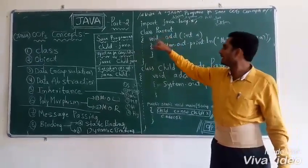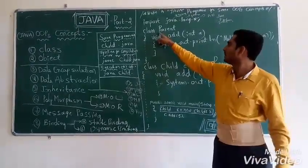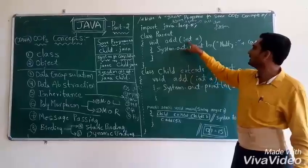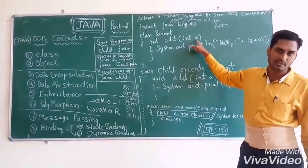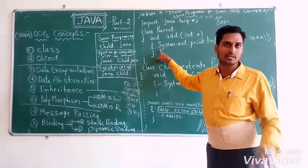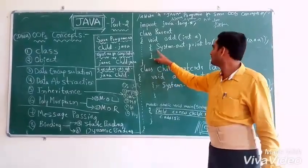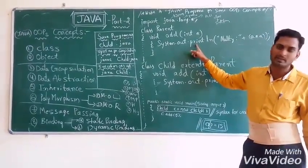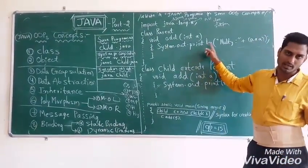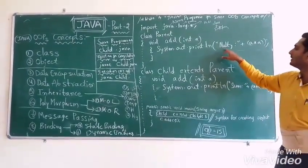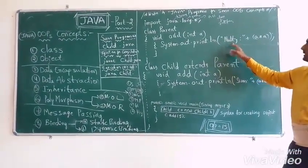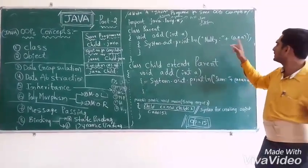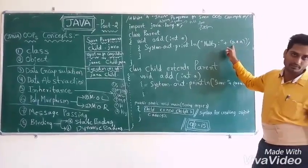In the program, class Parent is user-defined, so the P is capital. void means nothing — it is a keyword. add is a user-defined method. int is a data type; A is a variable. System is an inbuilt class so S is capital. out is an inbuilt static variable. println — print should be lowercase p — is an inbuilt method. ln means next line. Here, multi means multiplication. Double quotes print as-is; plus is concatenation; A into A is multiplication of the same value passed as argument.